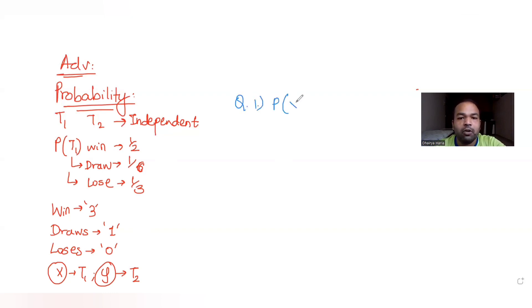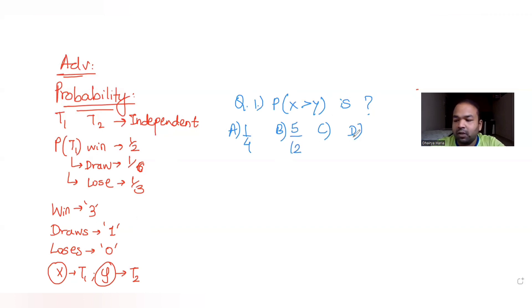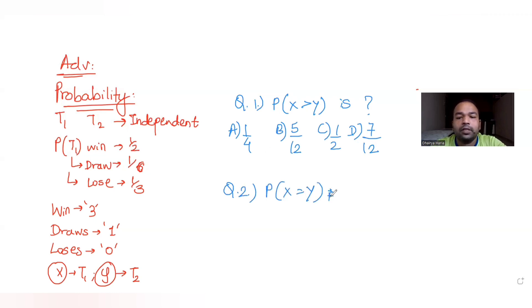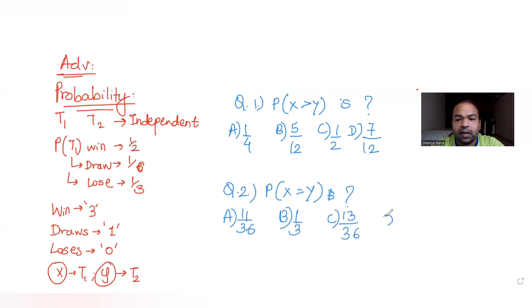There are two questions. Question one asks: what is the probability of X being greater than Y? The four options are 1/4, 5/12, 1/2, and 7/12. The second question asks for the probability that X and Y will be equal after the two games. The options for that are 11/36, 1/3, 13/36, and a fourth option.